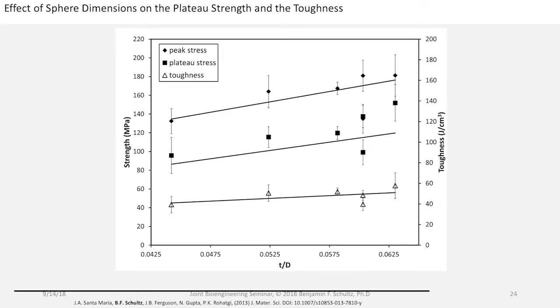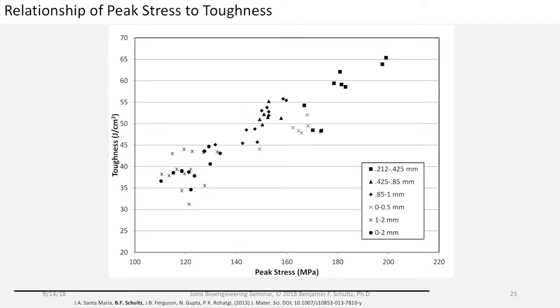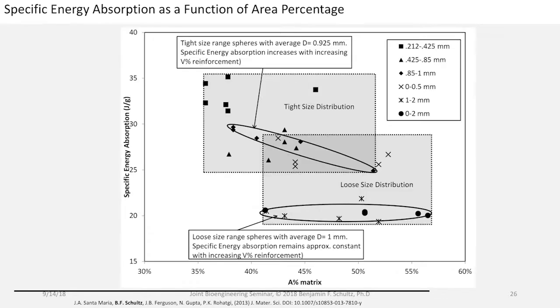Other properties that are important like the toughness that's looking at the energy absorption, we see effects of the T by D ratio as T by D ratio increases we have increasing properties across the board. This is toughness. Size ranges of the spheres give you better specific energy absorption with increasing sphere content.